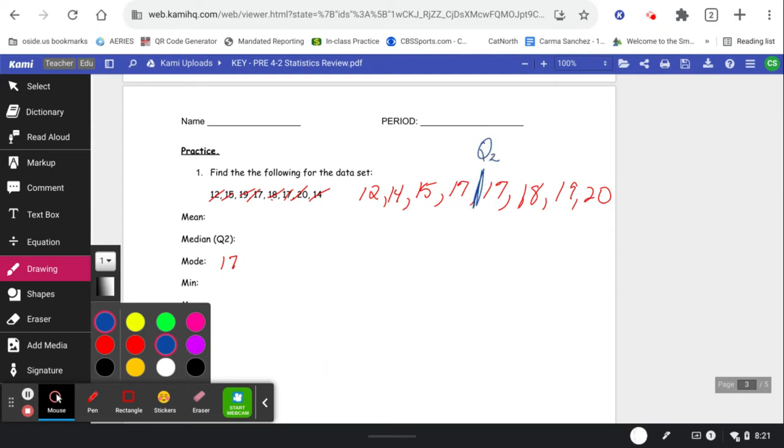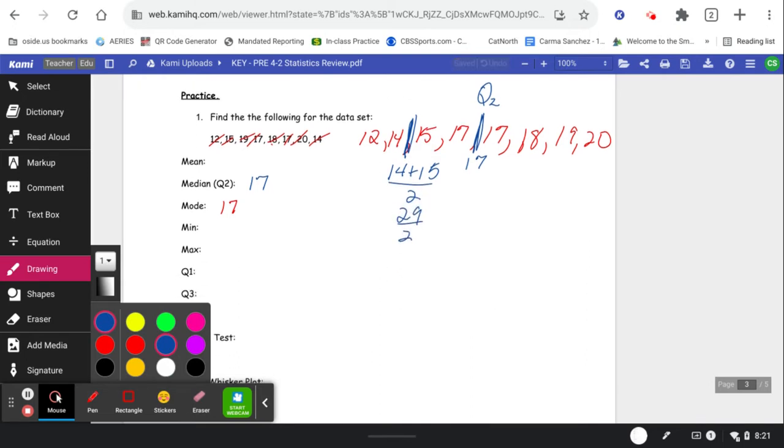My Q2 or my middle is in the middle of 17 and 17, which is just 17. My middle of the first half, in between 14 and 15, you add those and divide by two, which is 29 divided by two, which is 14.5. Go ahead and do that on your calculator if you're not sure how I got that.